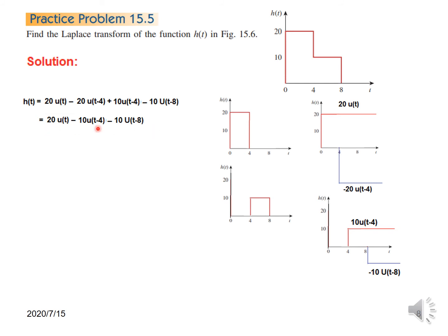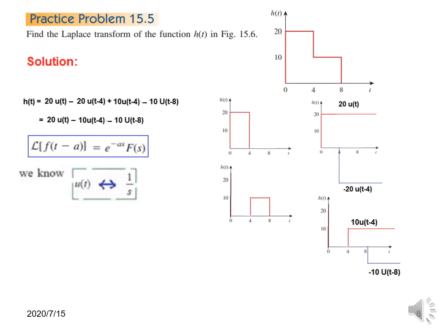So h(t) is the summation of these terms. After solving, since u(t minus 4) terms combine, we get: h(t) equals 20u(t) minus 10u(t minus 4) minus 10u(t minus 8). Now we convert it into Laplace using the shifting property, where F(s) is 1 over s for u(t). For the first term there is no shifting: 20u(t) gives 1 over s. For the second, shifting by 4: e to the minus 4s times 1 over s. For the third: minus e to the minus 8s times 1 over s. Taking 10 and s common, this is the final answer.